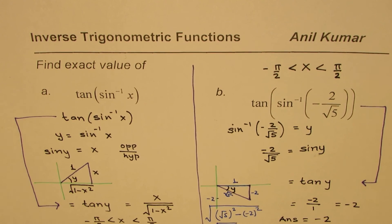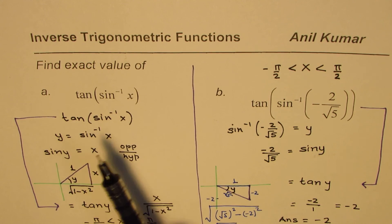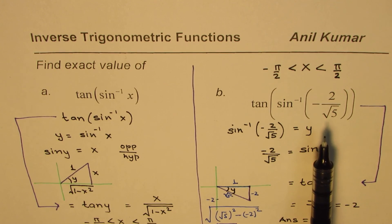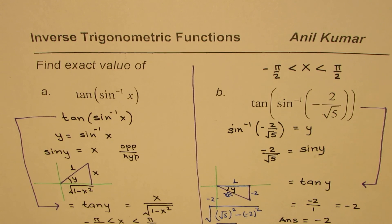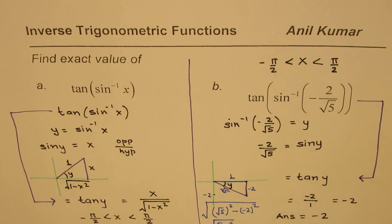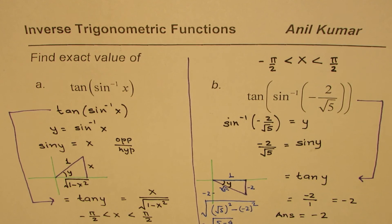So we get our answer as the expression equals -2. So that is how we can actually calculate the value when we combine tan with sine inverse. Here is the general expression and you have seen how it could also be applied when x value is negative. I'm Anil Kumar and I hope that helps. You can always share and subscribe to my videos, thank you and all the best.